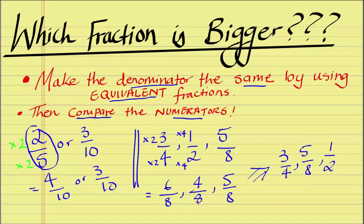As we can see here, 4 on 8, which is 1 on 2, is the smallest, while 6 on 8, which is 3 on 4, is the biggest.